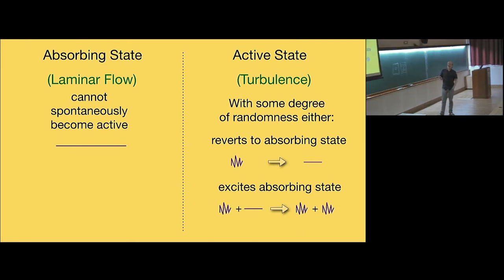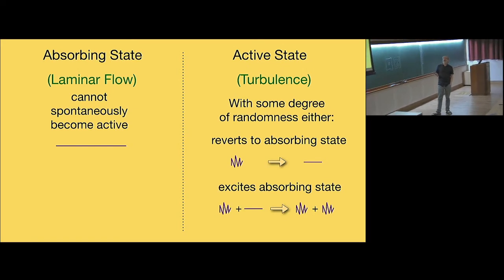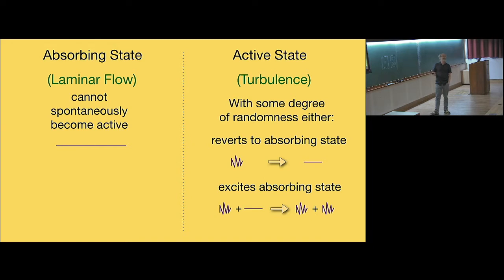Let me remind you of a few things. In these systems, one has an absorbing state, which for us will be laminar flow. That state cannot spontaneously become turbulent. That's just meant to represent laminar flow. I told you, all these systems, that laminar flow is stable. If you're in laminar flow, you're never going to leave it spontaneously. Then we have the active state, which for us is turbulence. With some degree of randomness, it's a deterministic system so be careful what I mean by randomness, turbulence can relaminarize, or turbulence can excite nearby laminar flow and increase the turbulent fraction. Generically, in an absorbing state transition, one has these ingredients, and these ingredients actually exist in turbulent shear flows as well.